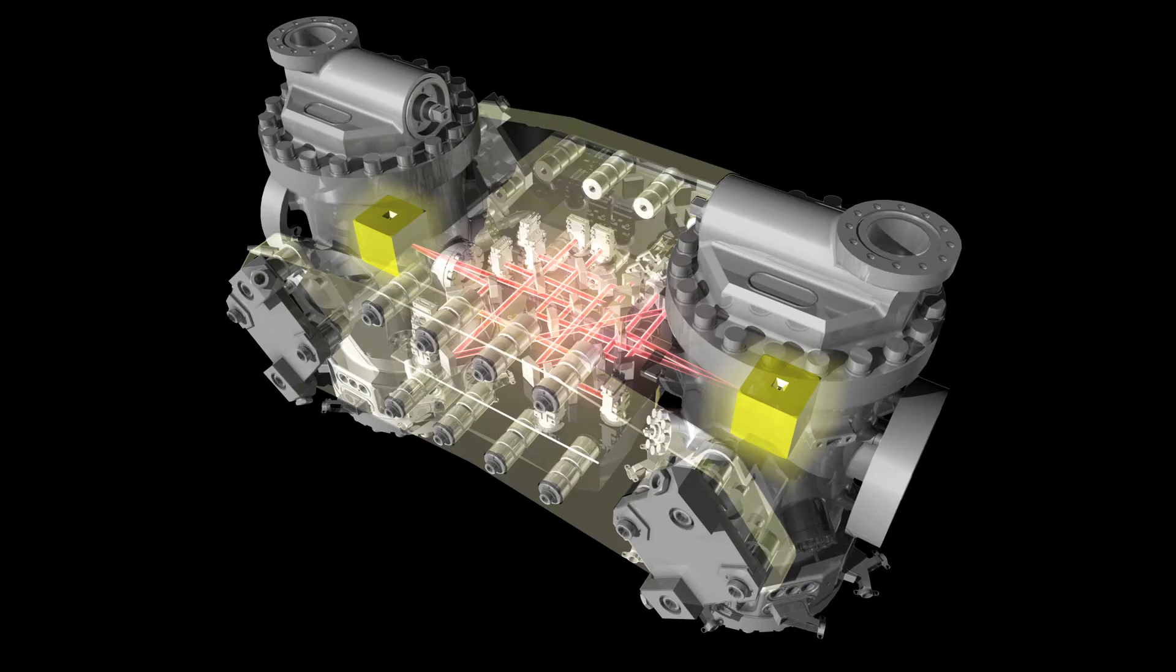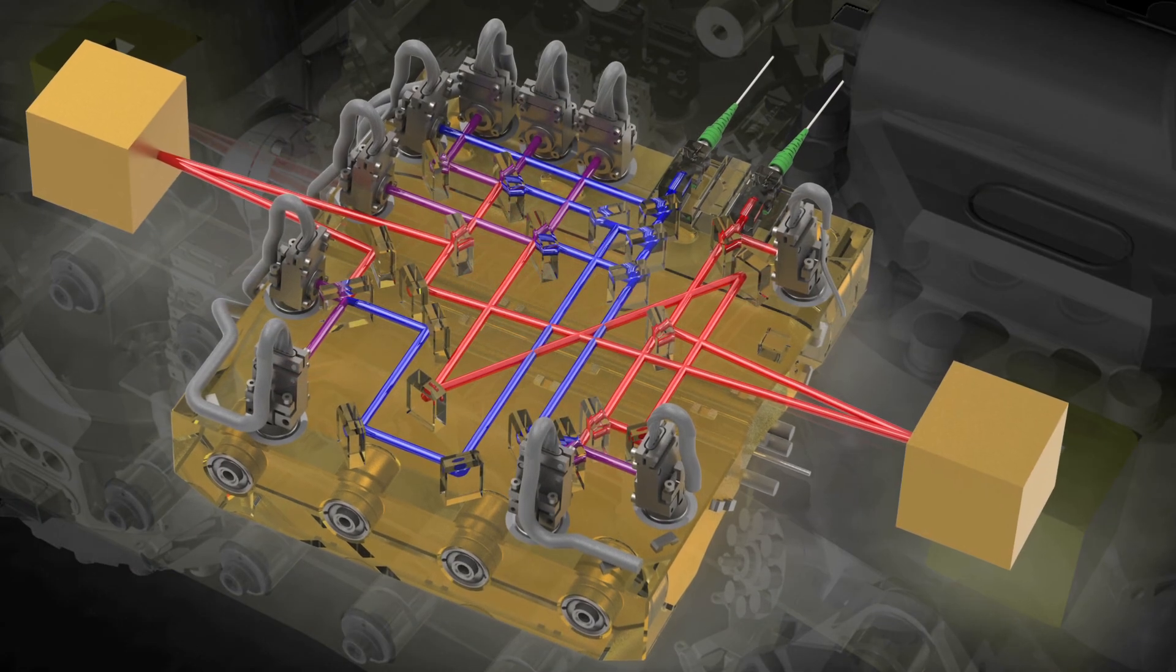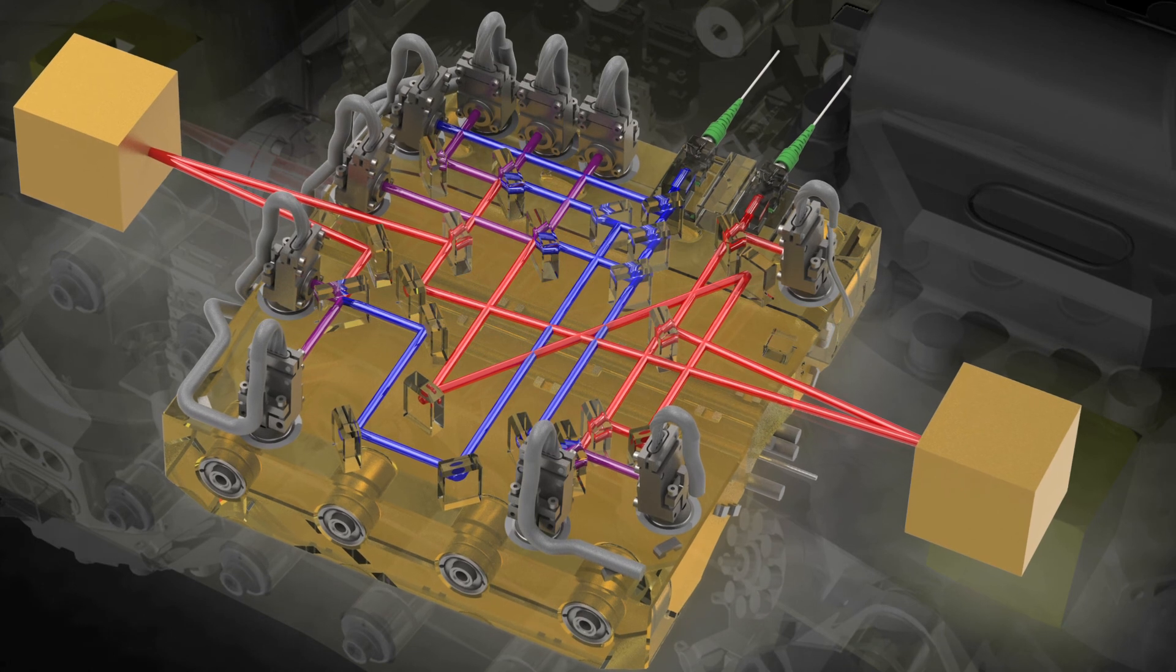The optical bench is the heart of the LISA Pathfinder spacecraft and the actual experiment. Its optical components, mirrors and splitters made of glass,